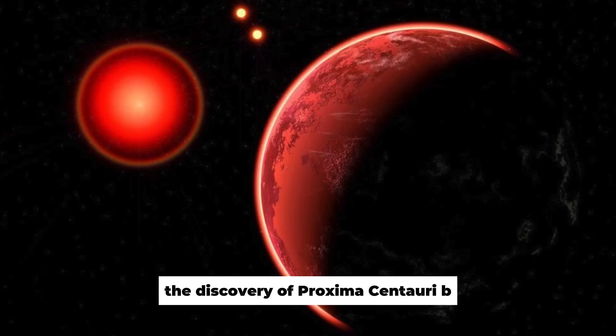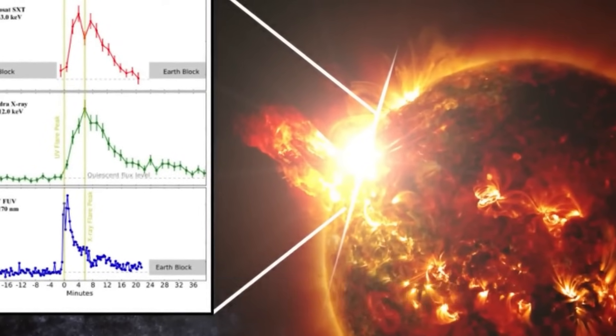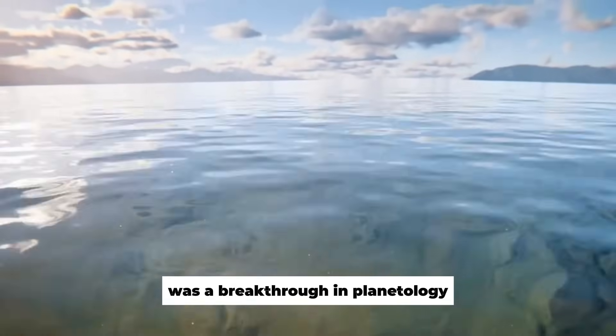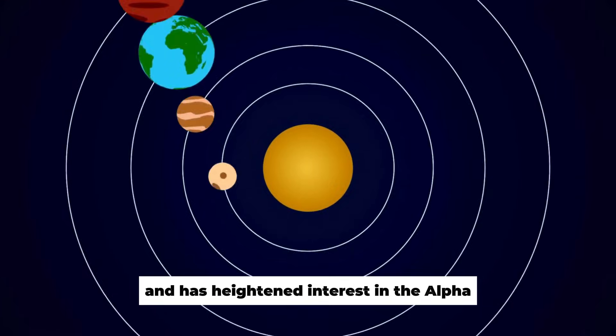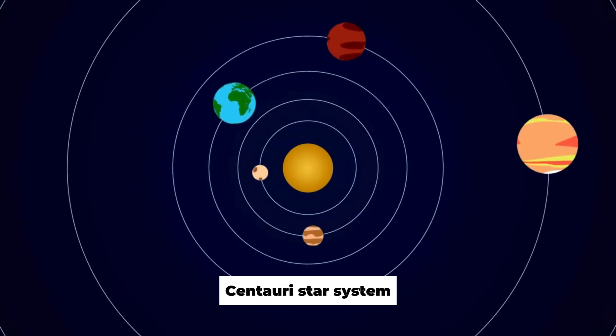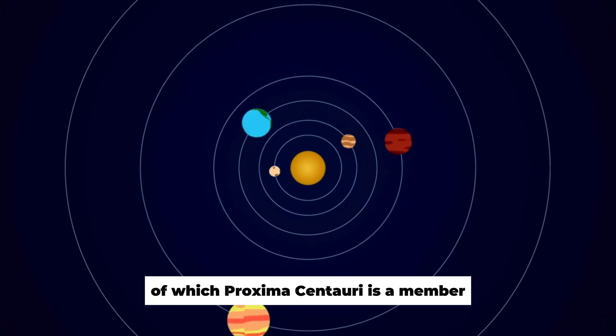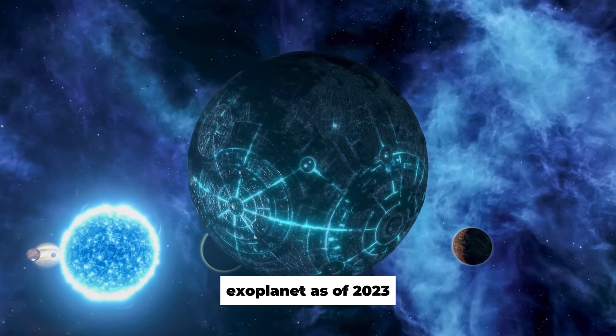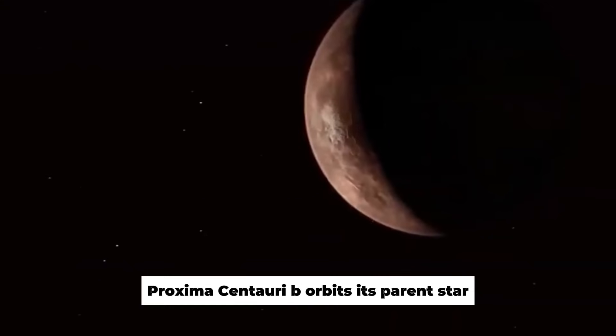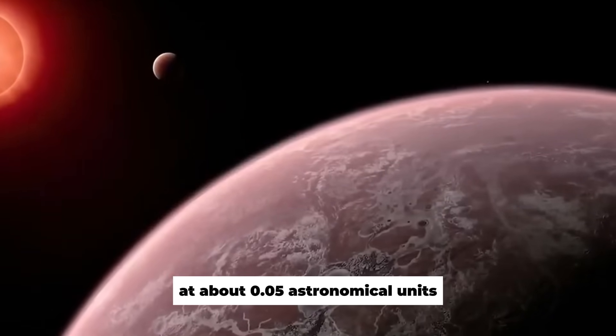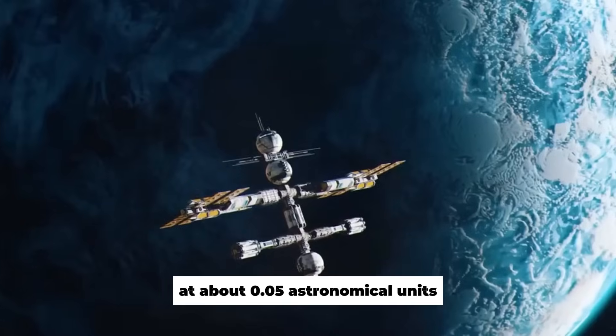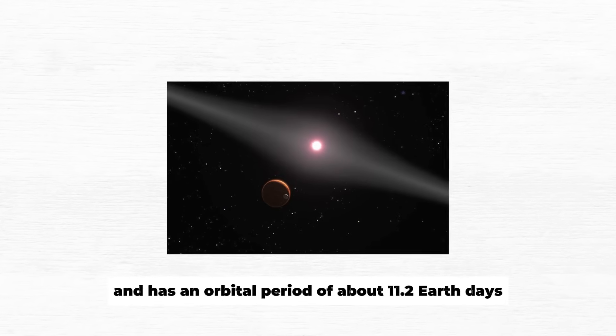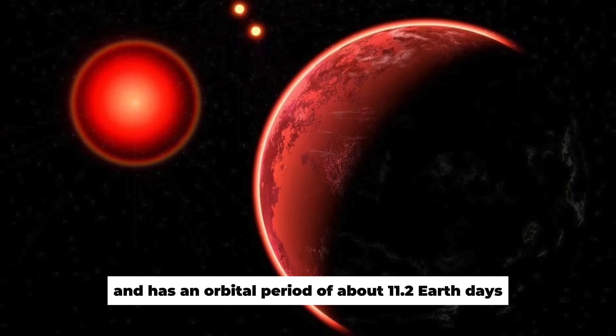Furthermore, the discovery of Proxima Centauri b, a planet at habitable distances from the nearest star to the solar system, was a breakthrough in planetology and has heightened interest in the Alpha Centauri star system, of which Proxima Centauri is a member. Proxima Centauri b is thought to be the best-known exoplanet as of 2023. Proxima Centauri b orbits its parent star at about 0.05 astronomical units, which is around 7.5 million kilometers, and has an orbital period of about 11.2 Earth days.